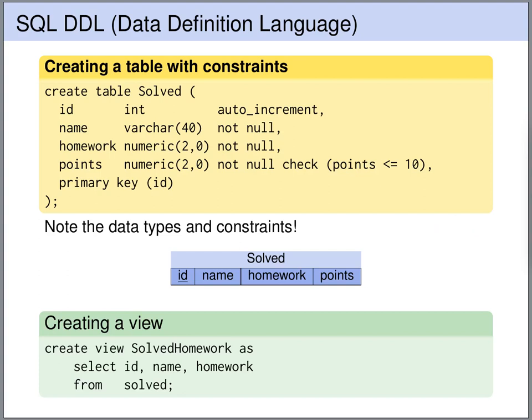We can also use SQL to create views. We could create a view called Solved Homework on the table. We give the name of the view and then provide an SQL statement that creates the table for this view. We specify that we want to select the ID, the name, and the homework — selecting three columns from the table.